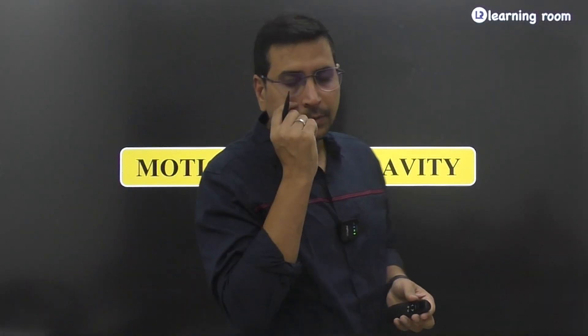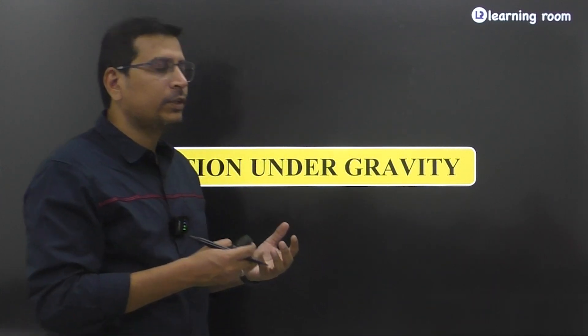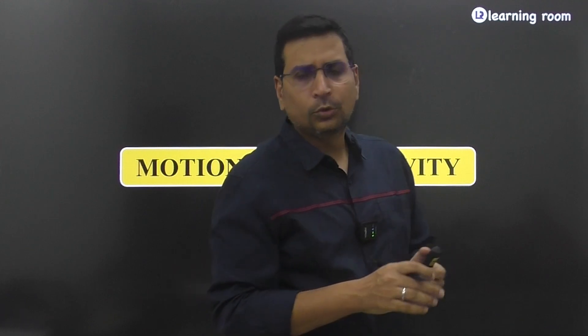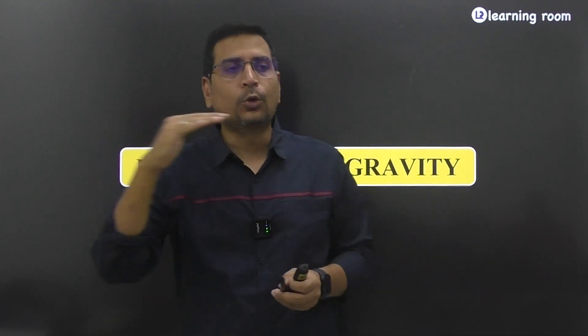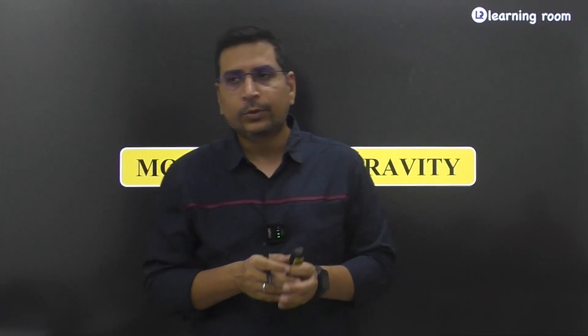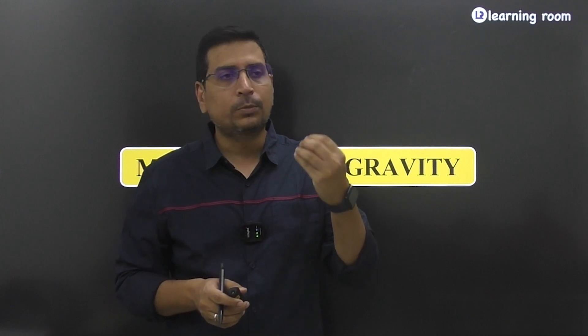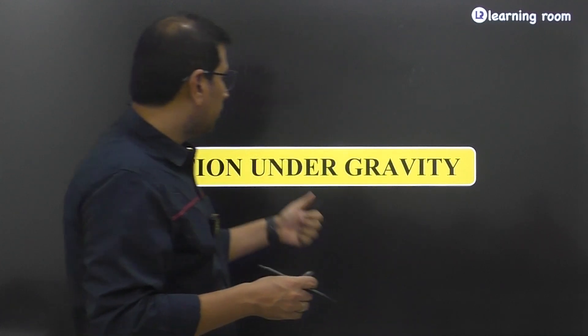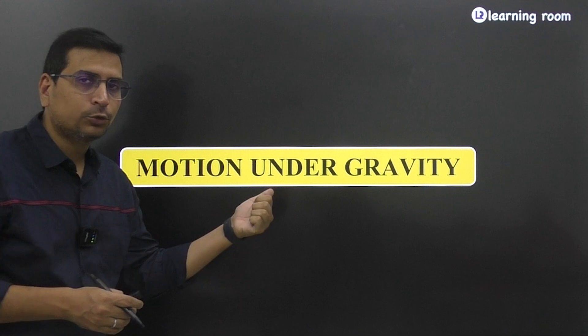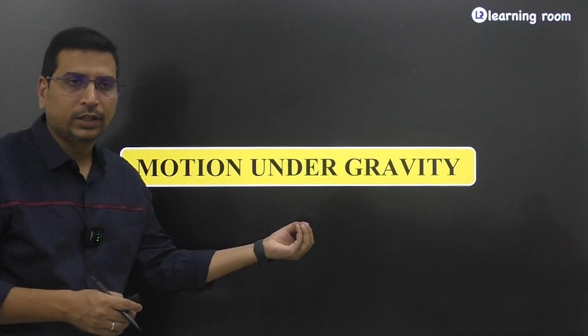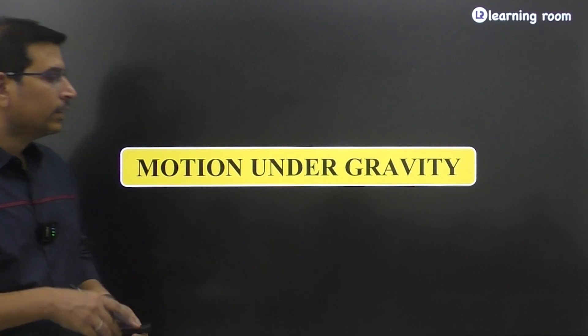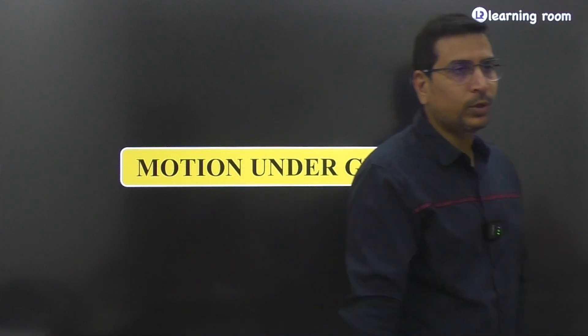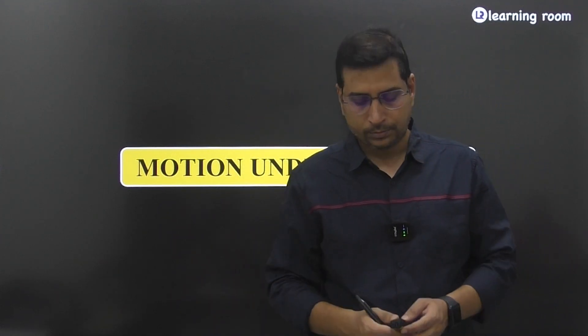Now we'll be discussing the next topic: motion of an object under the influence of gravity. We saw the equations of motion when the object has constant acceleration — those questions were related to horizontal motion. Now we're going to discuss what will happen if the object is traveling under vertical motion, when the object is moving mostly under the influence of gravity, because that is a vertical force. Let's first try to understand some terms.